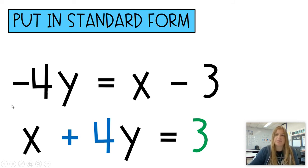So if you subtracted X on both sides, it would be negative X minus 4Y equals negative 3. Again, multiply or divide the entire equation by negative 1, so you have all those nice integers and a positive A value.